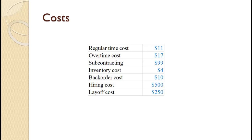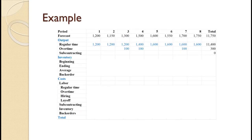They plan to hire one person in period four and another in period five to meet rising demand. They expect demand to fall after period eight, so they plan to lay off two people at the end of period eight. Additionally, beginning inventory is 50. The production plan is shown on the slide. Notice that regular time production goes up in period four and again in period five due to the additional hires. Finish costing out this plan.